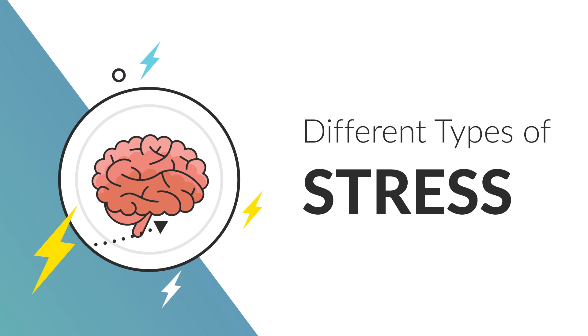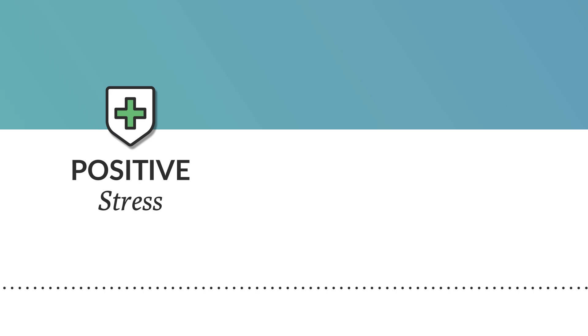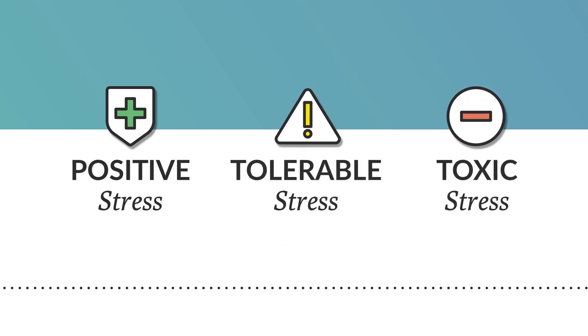Different types of stress can affect brain development early in life. These different types of stress are positive stress, tolerable stress, and toxic stress.